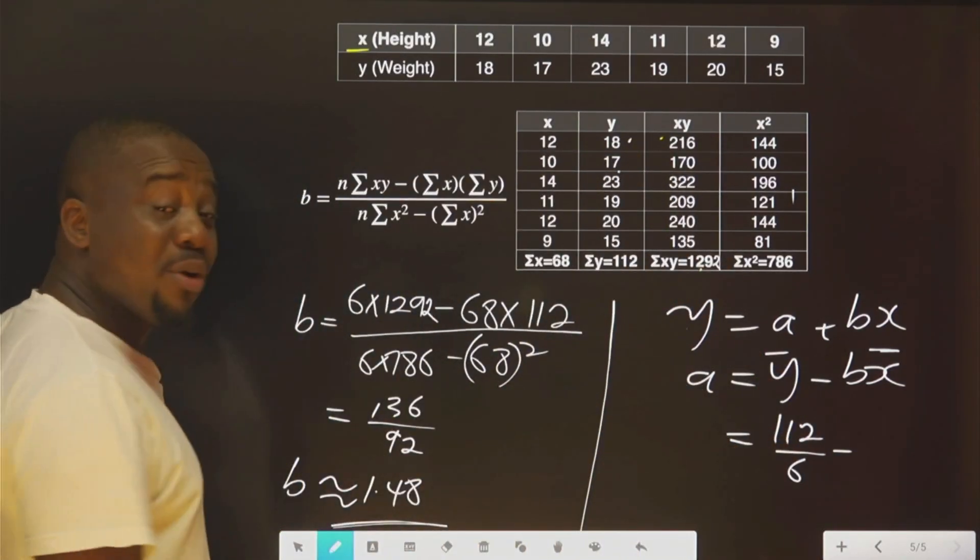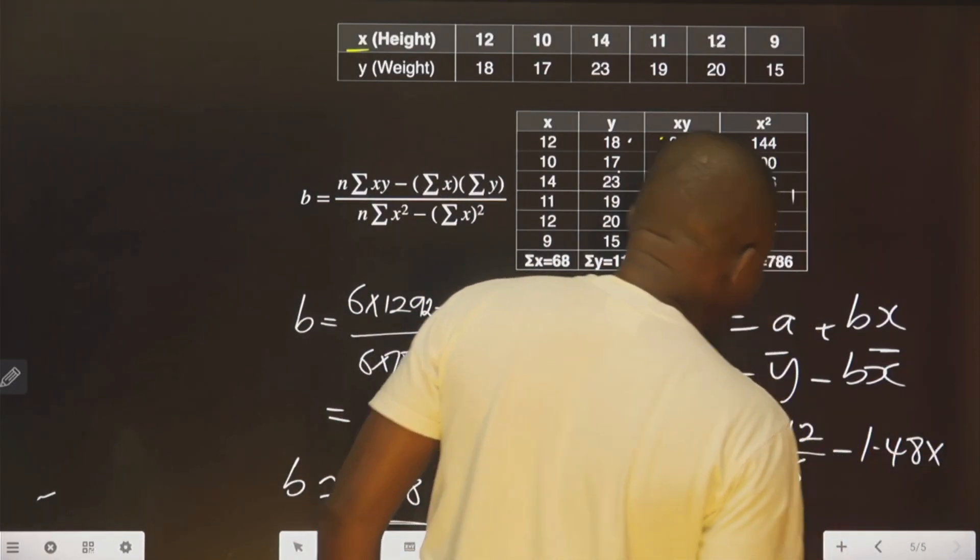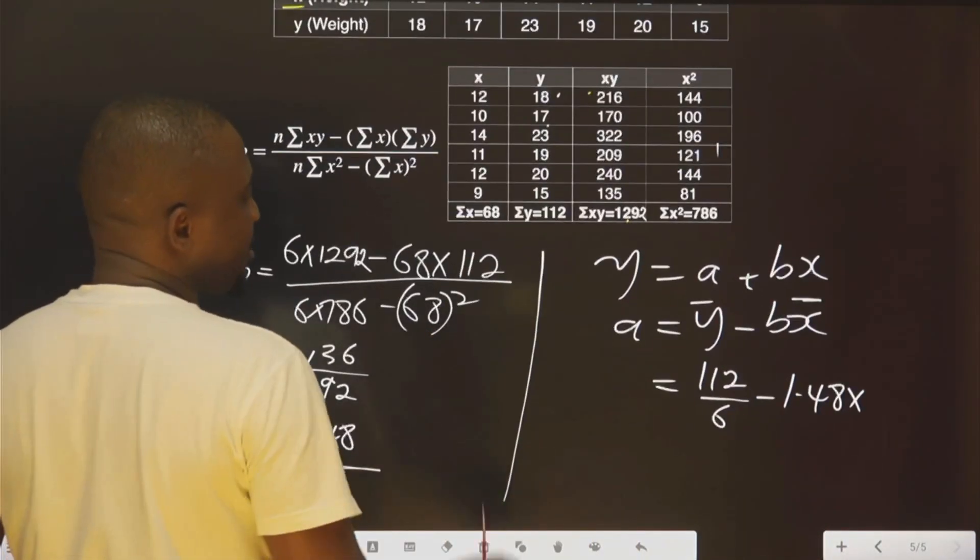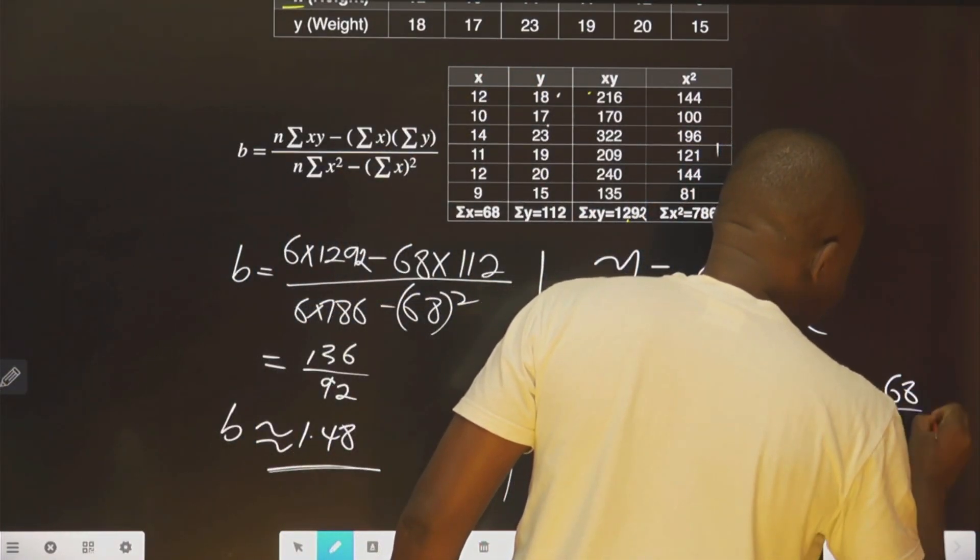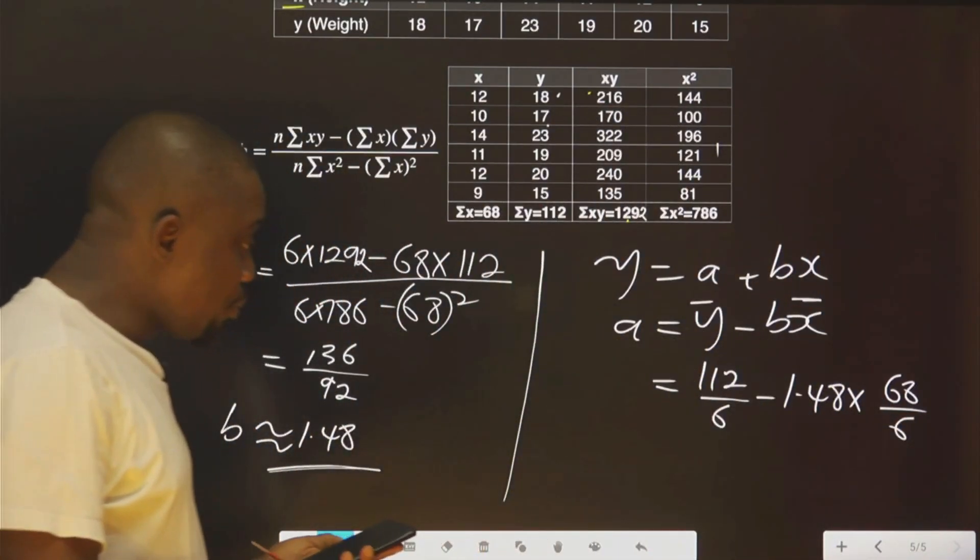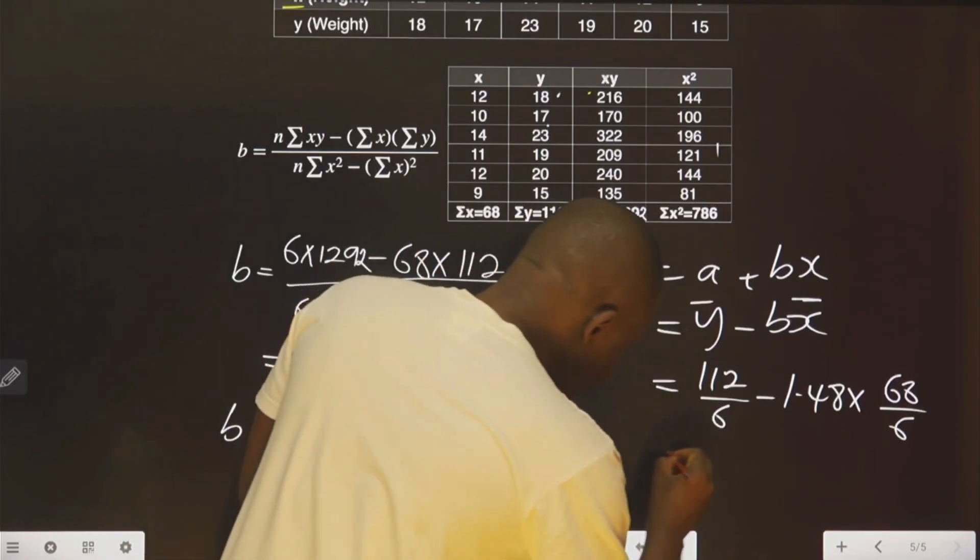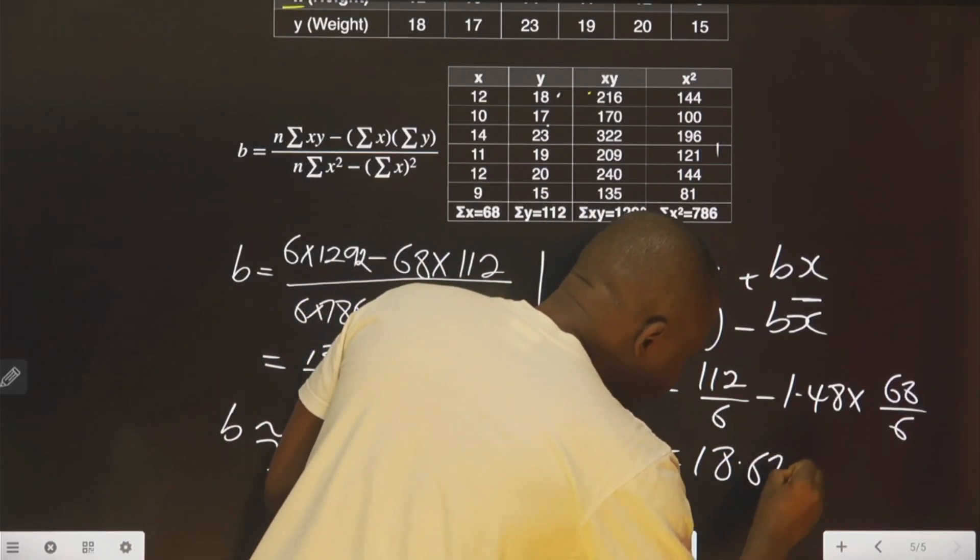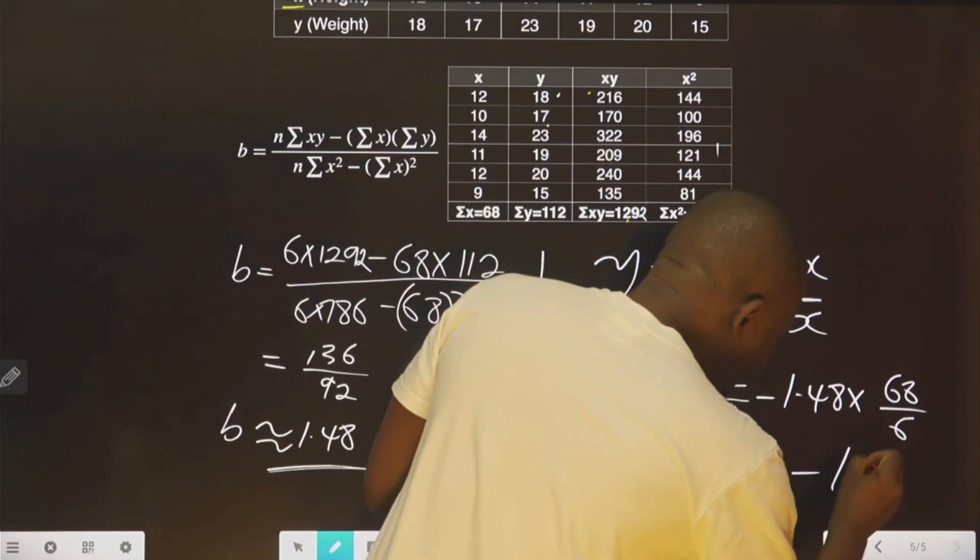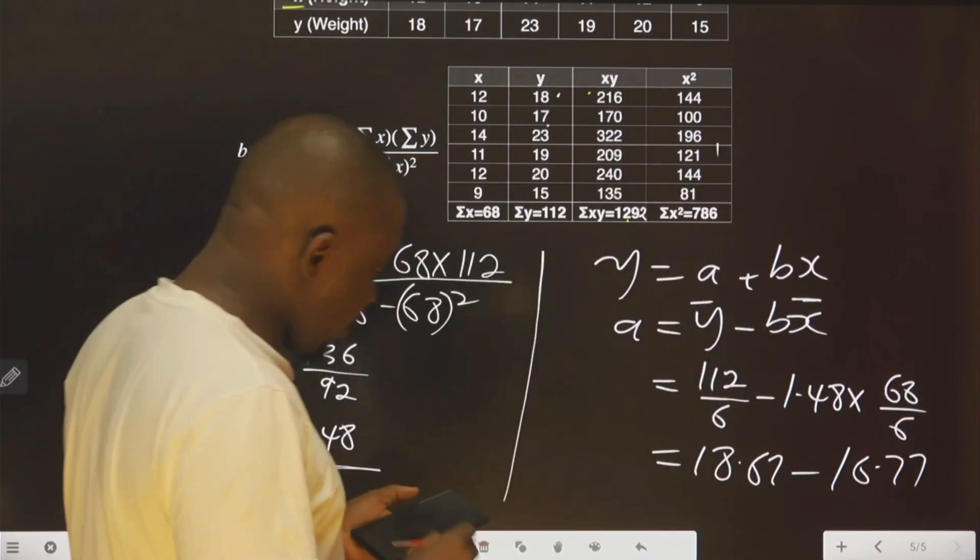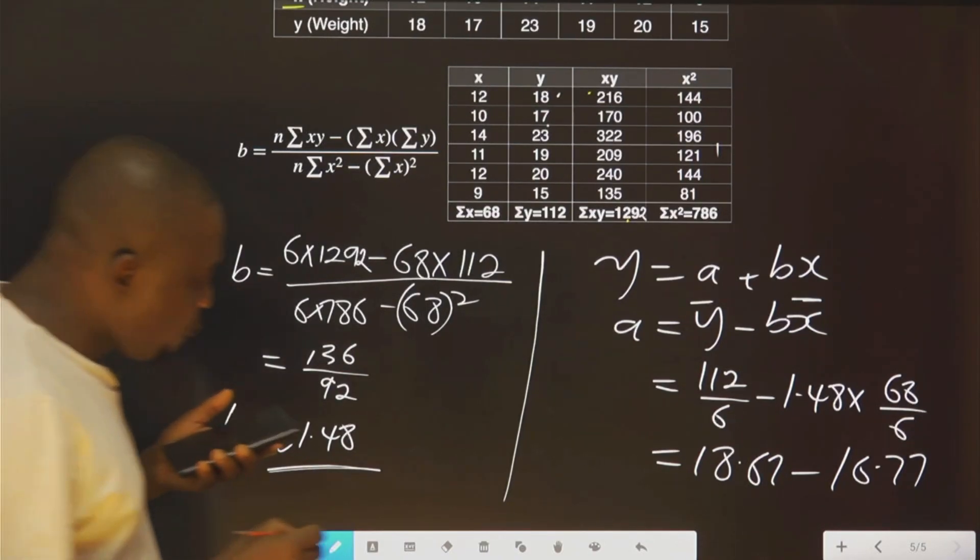Then B, we already know B now, 1.48. 1.48 multiplied by the mean of x. The mean of x, as you can see here, is 68 divided by 6. So let's plug in this information. This is 18.67 minus 16.77. If we subtract this now, we have 1.9.